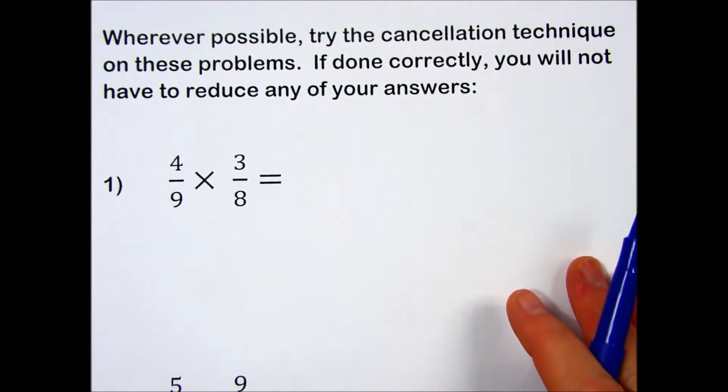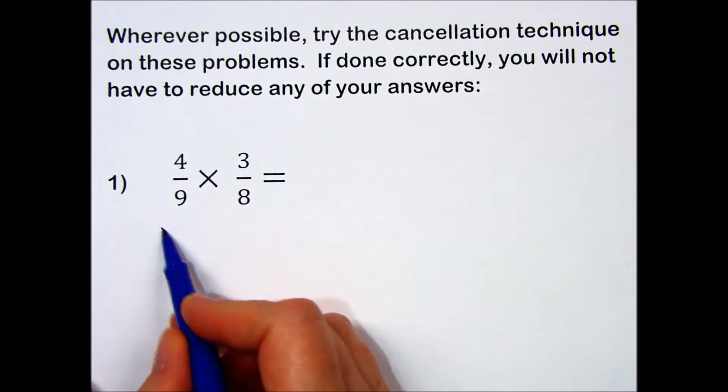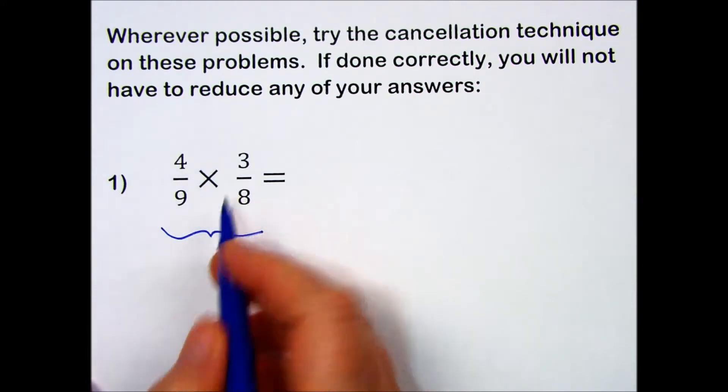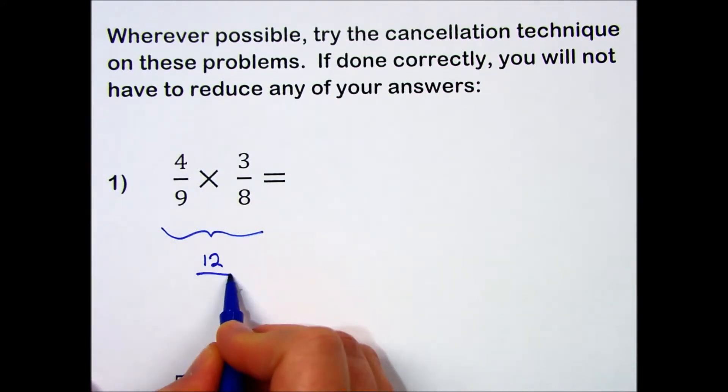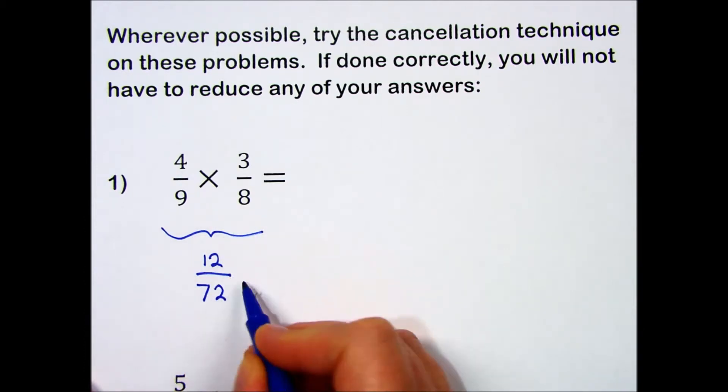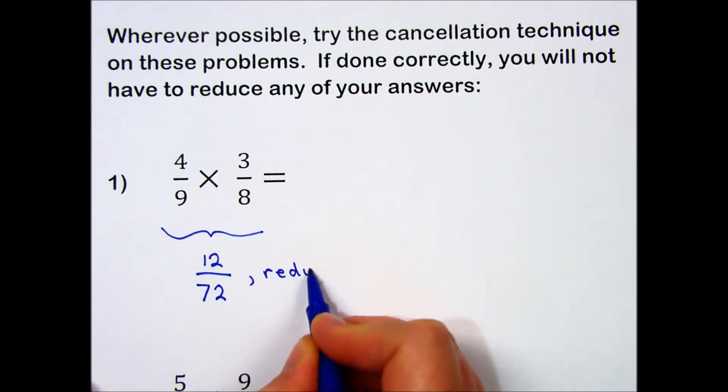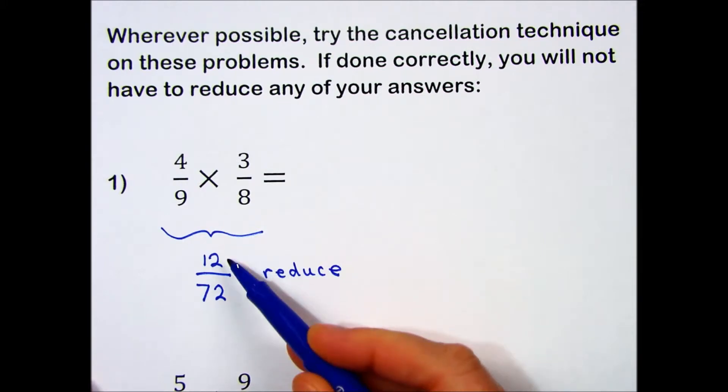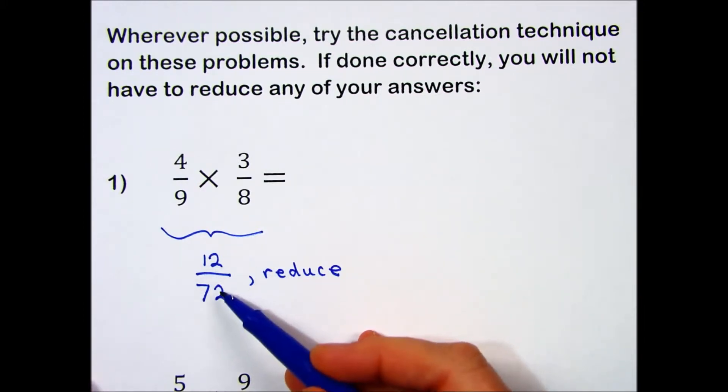Now, the original way to multiply two fractions was top times top, 4 times 3 is 12, bottom times bottom, 9 times 8 is 72, and then we would need to reduce. This may be a bit of a challenge because the numbers have gotten fairly large.